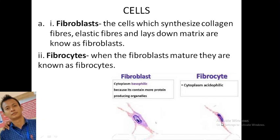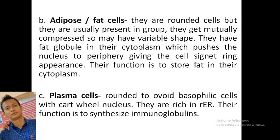In adipose tissues, cells are surrounded and usually present in the ground substance. They get mutually compressed, so many fat cells have a globule in their cytoplasm which pushes the nucleus to the periphery, giving the cells a signet ring appearance. The function of adipose tissue is storage of fat.